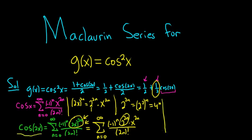Now we just have to multiply it by 1 half and then add 1 half. Let's go ahead and do all of that. So we have g of x, and that's equal to 1 half plus 1 half cosine 2x. So that's equal to 1 half plus 1 half.